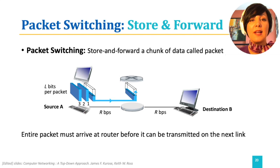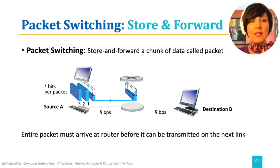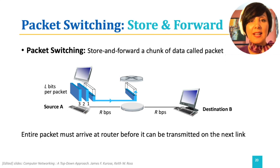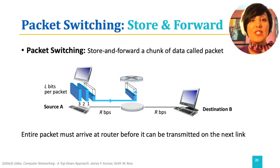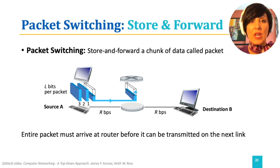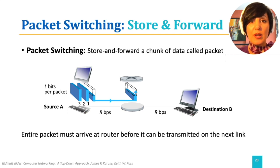Assume we have a packet of data of length L, meaning the data packet has L bits in it. This packet needs to be sent from source A to destination B, as shown in the figure. There is one switch on the path from A to B, with a link of capacity R bits per second connecting A to the switch, and another link of capacity R bits per second connecting the switch to B. With store-and-forward, the packet of length L is first sent from A to the switch at full capacity, stored in the switch until the link to destination B becomes available, and then the switch puts the packet onto the link towards B.